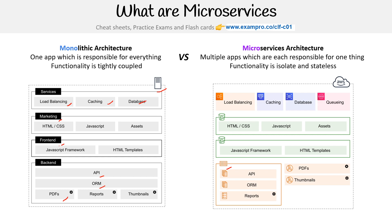Your reports, maybe you've abstracted out some particular functions into Lambda functions. You have your marketing website hosted on S3, your front-end JavaScript hosted on S3. You're now using Elastic Load Balancer, ElastiCache, RDS, SQS. And that's the idea between monoliths and microservices.